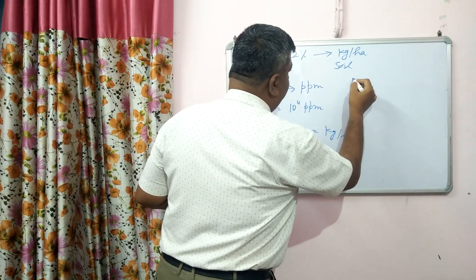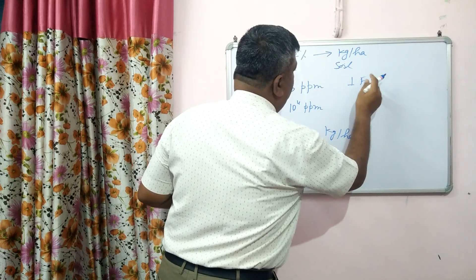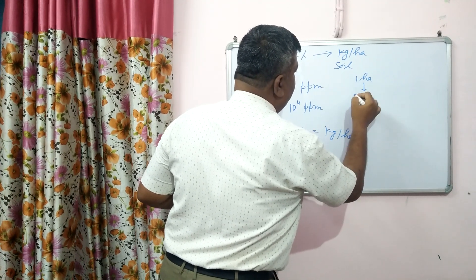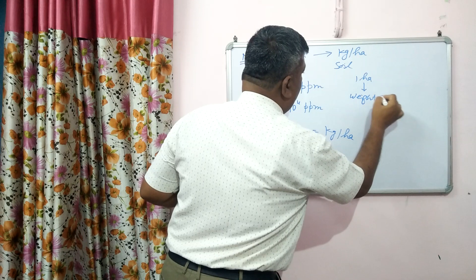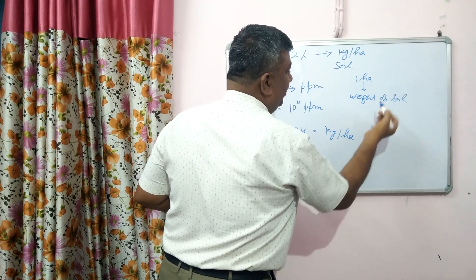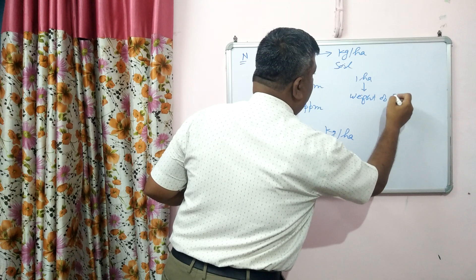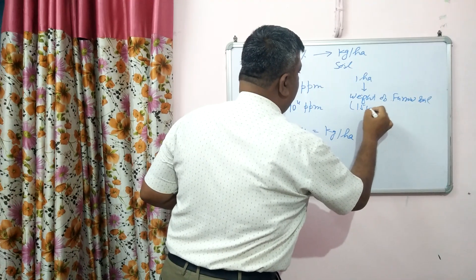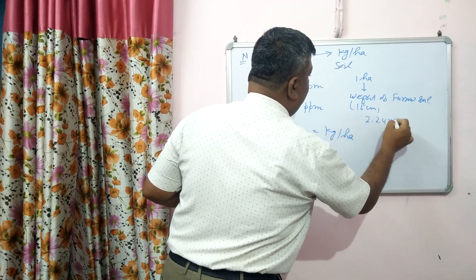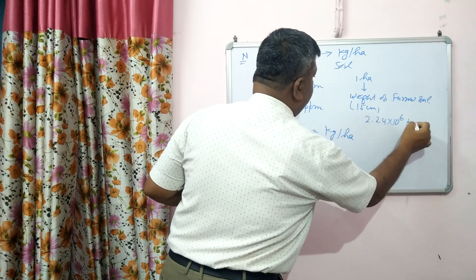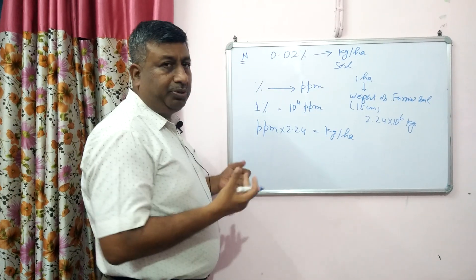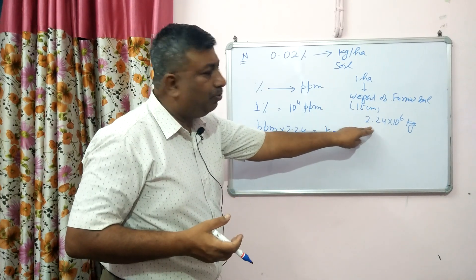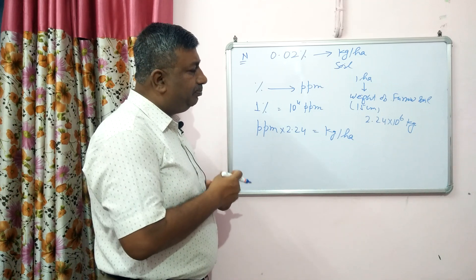The reason we multiply by 2.24 is as follows: in one hectare area, the weight of the furrow soil — where tillage is done — up to a depth of 15 centimeters is 2.24 × 10⁶ kg. So this is the weight of the furrow soil per hectare.